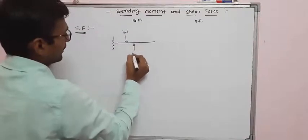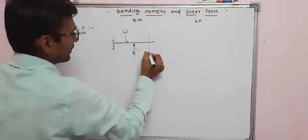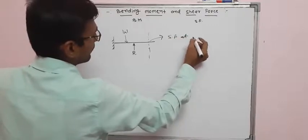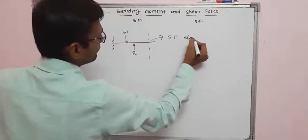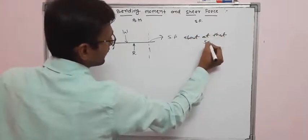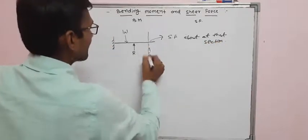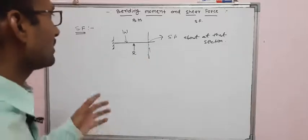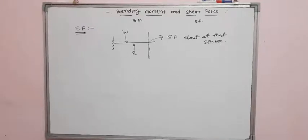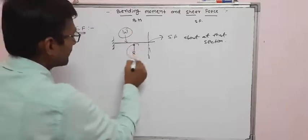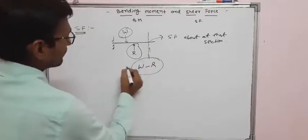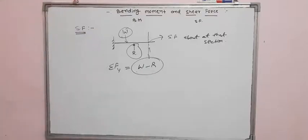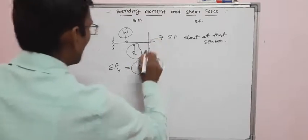Let us take an example. About a particular section, the shear force is calculated as the algebraic sum of all vertical forces about that section. So at that section, the shear force is the algebraic sum of all vertical forces.